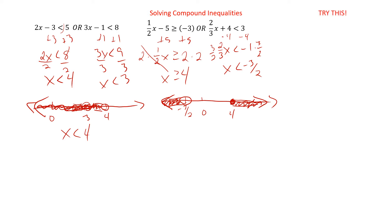Give this one a shot. We have three x minus two is less than four, or four x plus three is greater than or equal to 19. So pause the video, work the problem, and when you're ready come on back and we'll look at it.